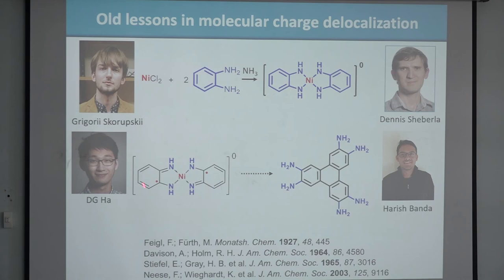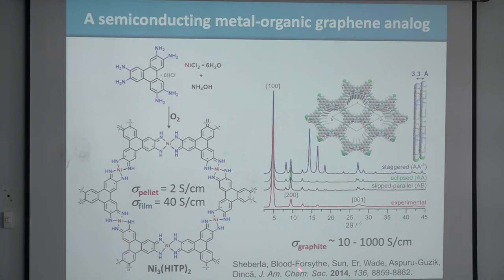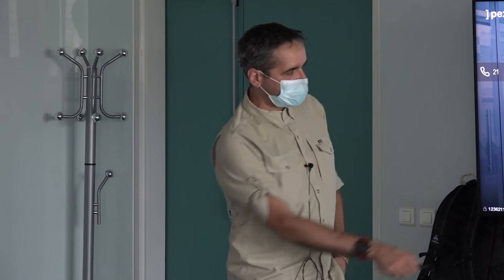If you connect three phenylenediamines to a single ligand and do the same reaction, you end up with a hexagonal sheet that looks like graphene and actually stacks like graphite — but it has channels, so it's a porous sort of graphite. The conductivity of this material is about 2 S/cm, and up to 40 S/cm in polycrystalline film — basically the same value as graphite itself, but now it's manageable and tunable. You can change the nitrogen to oxygen, change the metal, and do all sorts of things.